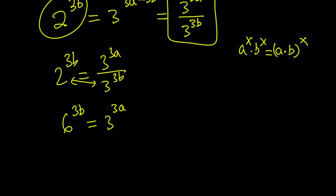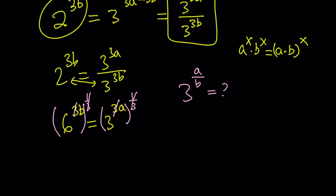Our goal is to get 3 to the power a over b. We can simplify the exponents — since it's a 3, we don't have the absolute value issue. We can cube root both sides, which is equivalent to raising both sides to the power of 1/3. The 3 and the 1/3 cancel out, giving something simpler. Writing 3 to the power a on the left-hand side, we get 3 to the power a equals 6 to the power b.